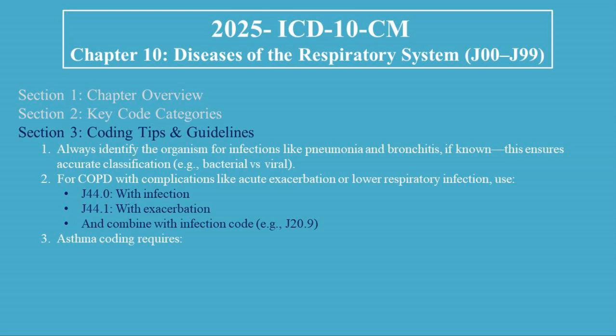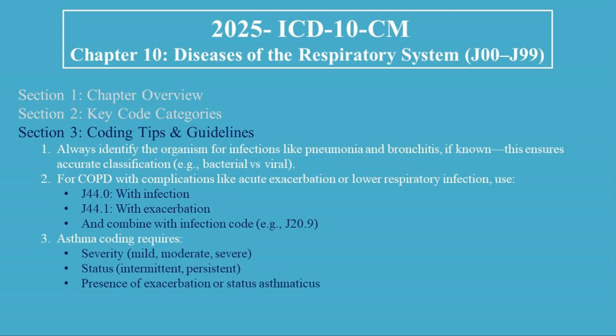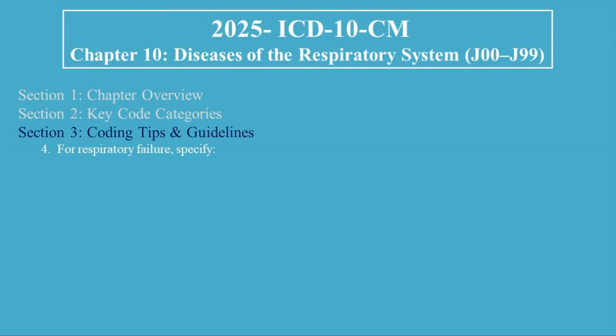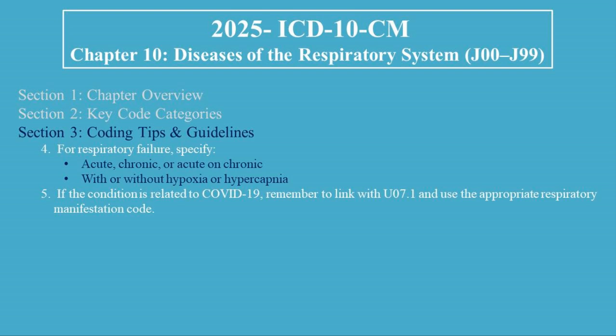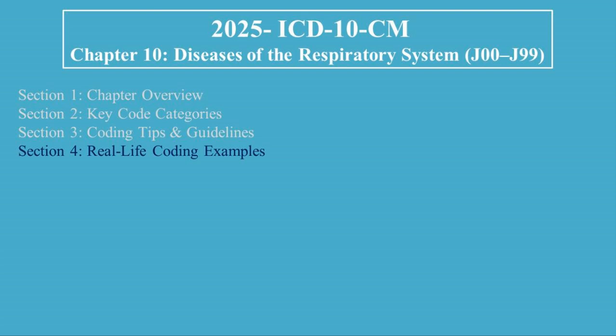Third, asthma coding requires specifying severity — mild, moderate, or severe — as well as status: intermittent or persistent, and the presence of exacerbation or status asthmaticus. Fourth, for respiratory failure, specify acute, chronic, or acute on chronic, and whether it is with or without hypoxia or hypercapnia. Fifth, if the condition is related to COVID-19, remember to link with U07.1 and use the appropriate respiratory manifestation code.